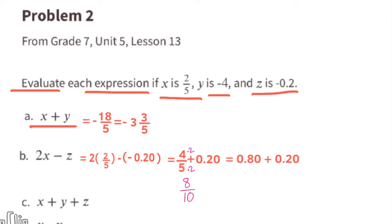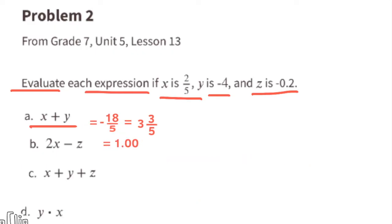Writing as decimals: 8 tenths is 0.8 and 2 tenths is 0.2, similar to how 8 dimes equals 80 pennies and 2 dimes equals 20 pennies. 8 tenths plus 2 tenths equals 10 tenths, or one whole. So 2x minus z equals 1.